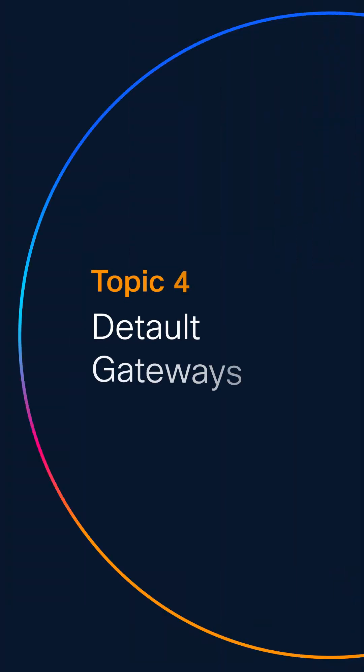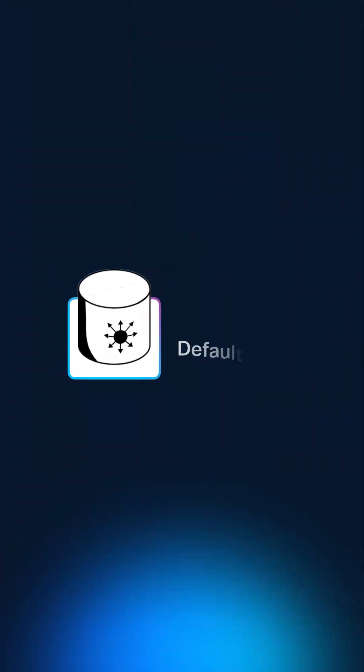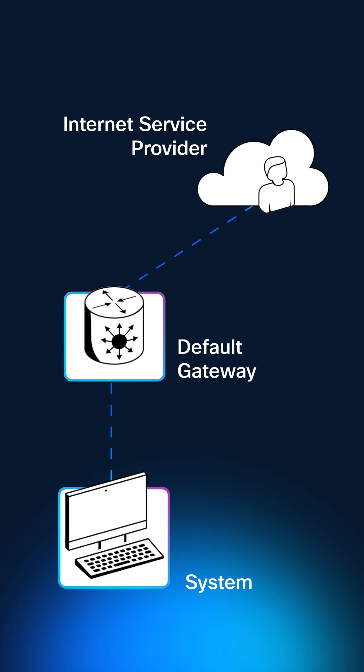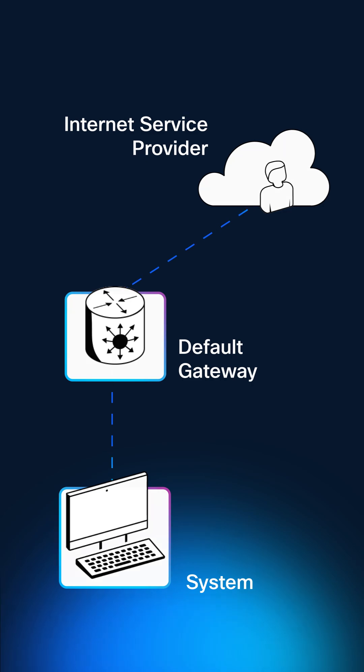Public IP addresses, on the other hand, are used to identify devices out there on the internet. A default gateway is the device, usually a router, that sends your traffic out of your local network and into the wider world. When your device doesn't recognize a destination IP address as being local, it sends the data to the gateway's IP address, which then knows where to forward it next.